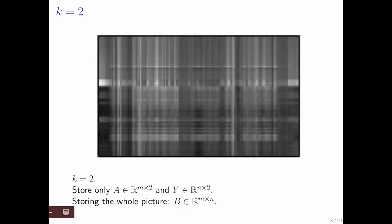If we move on and we use two columns, we get this. Again, not a particularly good approximation, but it does have the advantage that we only need to store two columns for A and two columns for Y.